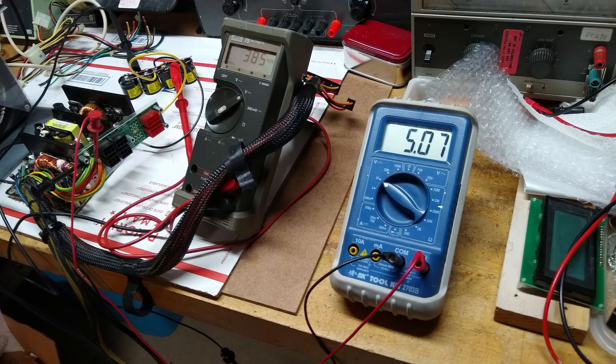After applying AC power to the power supply, it appeared that a high voltage DC of 385 volts was being developed across the capacitor bank and the power supply was regulating at 5 volts DC.